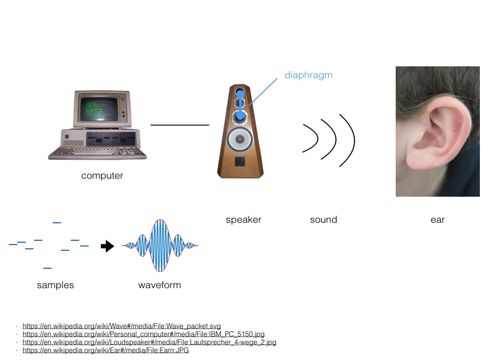We refer to the process of returning to an analog signal as digital-to-analog conversion, also known as DAC. To go back to a physical sound for playback, a device changes the array of integers back into an analog signal first, and then this analog signal is sent to the speakers. The speakers move their diaphragms to match the analog signal, which creates changes in pressure in the air to create sound.